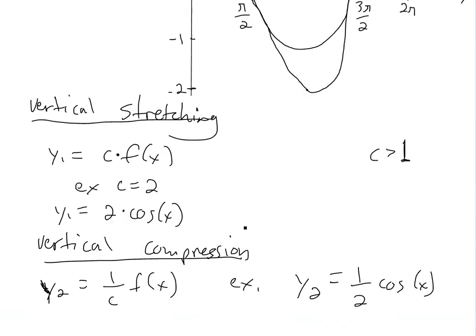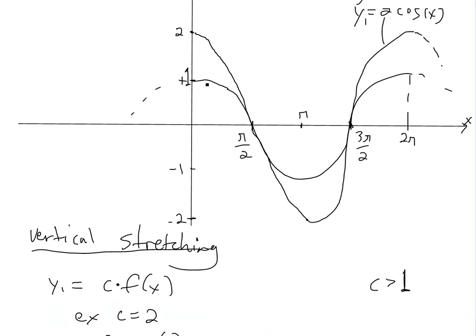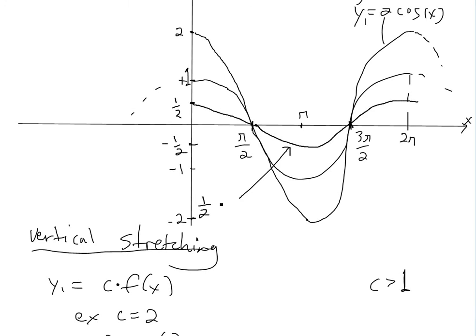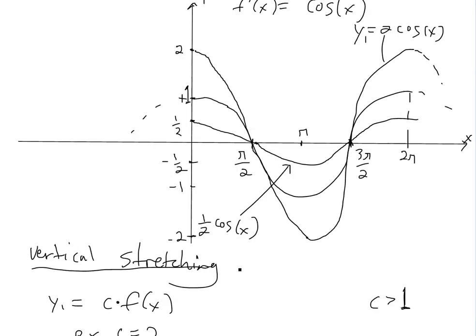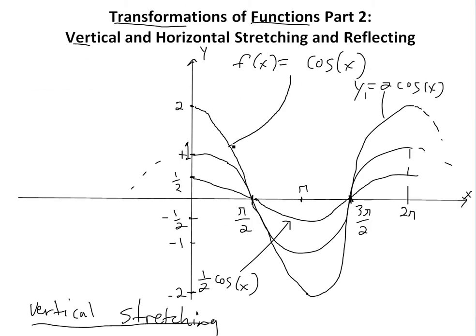This is very similar, except now we're multiplying by 1 over 2. So at 1 times 1 over 2, it's going to be 1 over 2. And it goes back to 0, since 0 times 1 over 2 is 0. This is negative 1 over 2 at the trough. So this is just 1 over 2 cos x — that's compressing it, whereas the original one is just cos x.